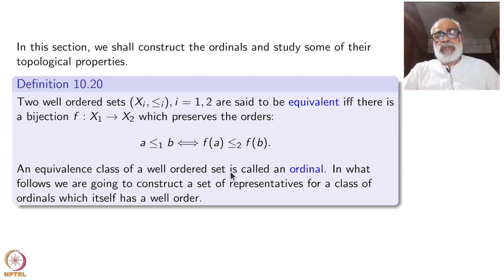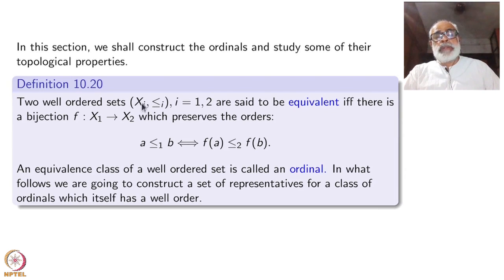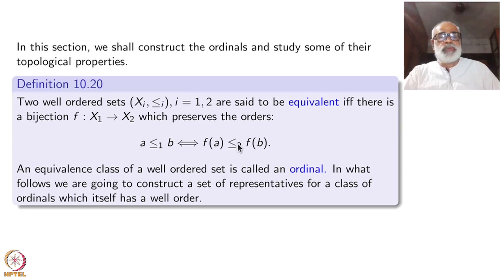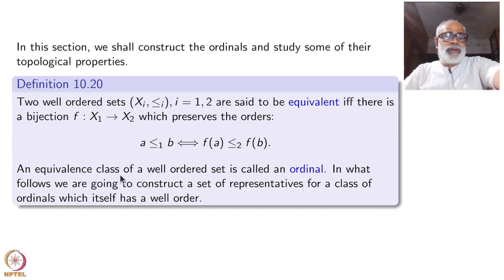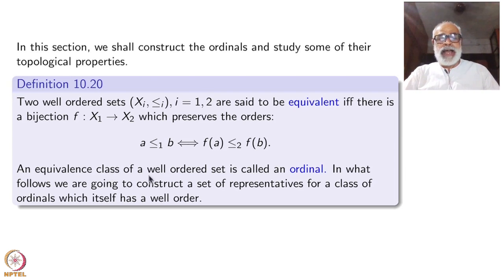An equivalence class of a well-ordered set is called an ordinal. You take the collection of all well-ordered sets — that is not a set. However, we can define the equivalence relation by this process. You can verify that this is reflexive, symmetric, and transitive. So you can look at equivalence classes. This word 'class' is very important here — this class itself is not a set. That class is called an ordinal.